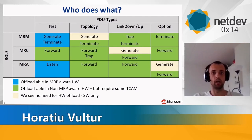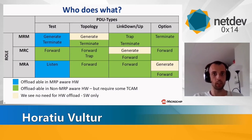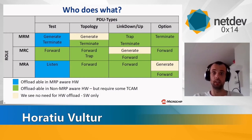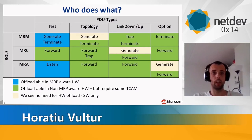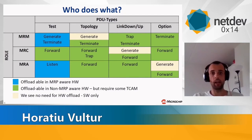MRM is generating the test frames, sending them on the ring ports, and terminating those frames. It's also generating topology frames and terminates those. It traps the link down and link up frames and terminates those as well. Optional frames will be covered later, but it terminates those too. With MRC, it's just forwarding those frames. And MRA is listening and forwarding the other frames.